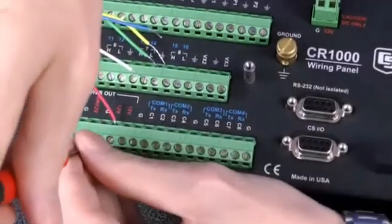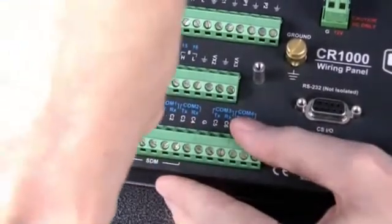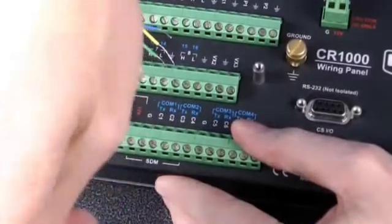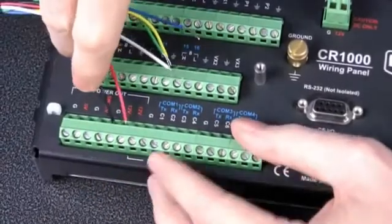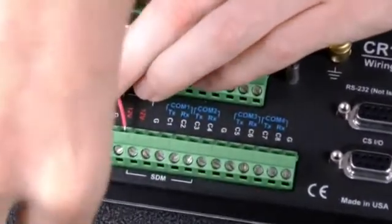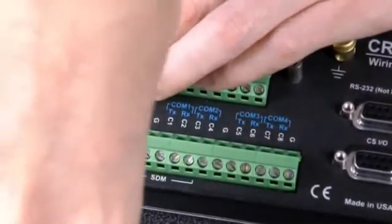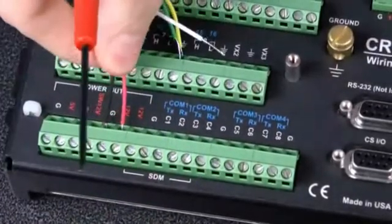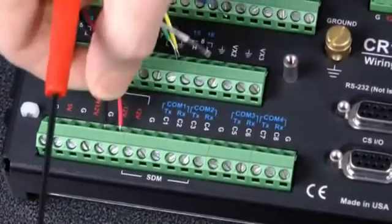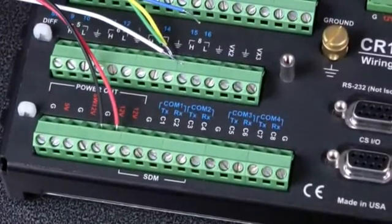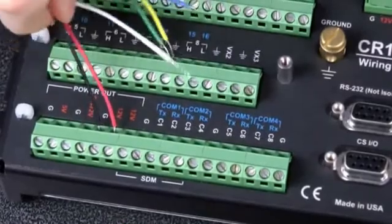So if you haven't used these terminals before, to open a terminal up to put a wire in, unscrew anti-clockwise, put your wire into the terminal and then screw it up in a clockwise direction until you can't screw any more. There we go. And then just give the wires a little tug just to make sure they're nice and firmly seated in those clasps.